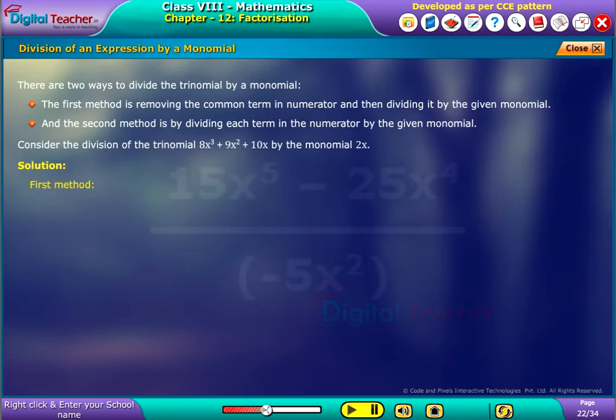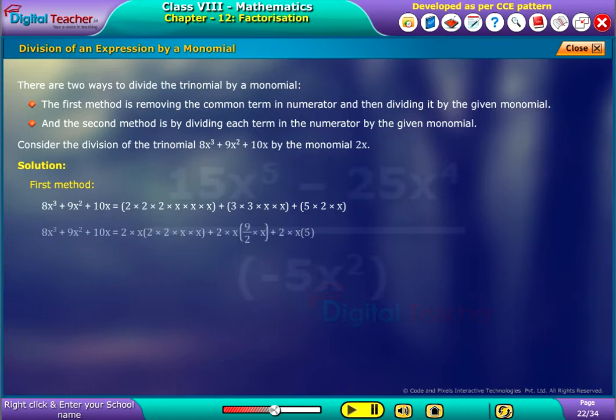First method: Initially, by writing the given three terms of numerator in irreducible form, we get as shown. Here, we observe that 2x is common in each term, so by taking it common, we get as shown.